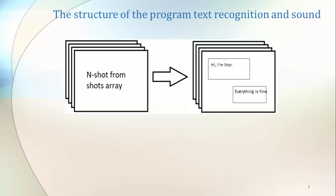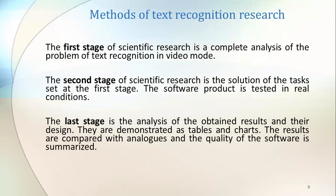Now let's move to the slide on methods of text recognition research. It consists of three stages. The first stage is a complete analysis of the problem of text recognition in video mode. The second stage involves solving the tasks set in the first stage, where the software product is tested in real conditions. The last stage is the analysis of obtained results, demonstrated in tables and charts, compared with analogs, and the quality of the software is summarized.